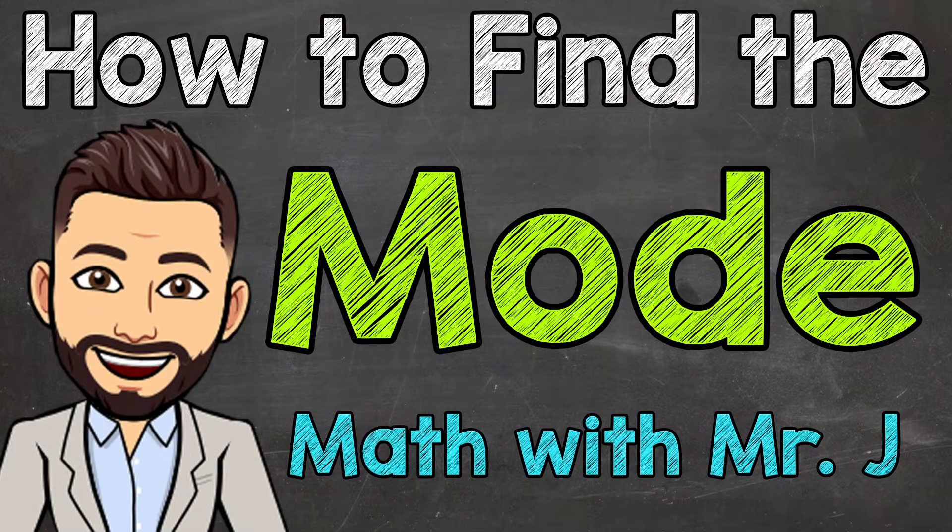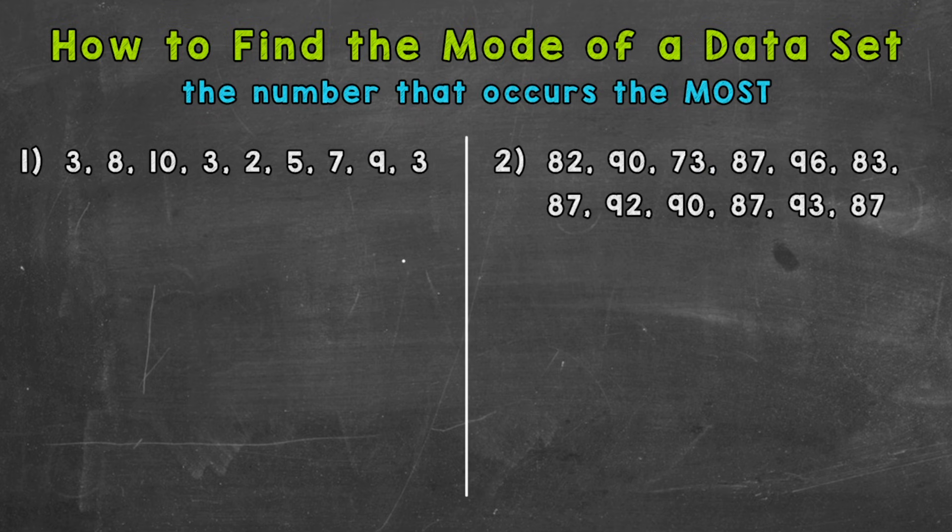Welcome to Math with Mr. J. In this video I'm going to cover how to find the mode of a data set. The mode is the number that occurs the most, and that's how I remember it. Mode and most sound very similar, so once you have mean, median, mode, and range all mixed up, it's easy to forget which is which. So we need to make connections. Mode equals most - they both sound similar.